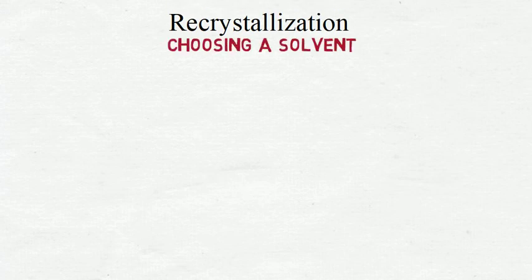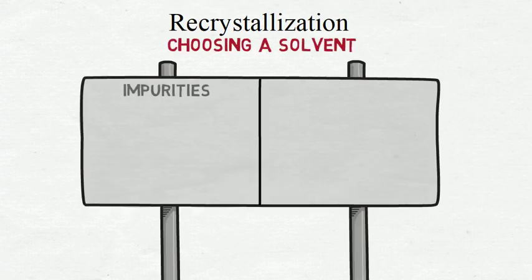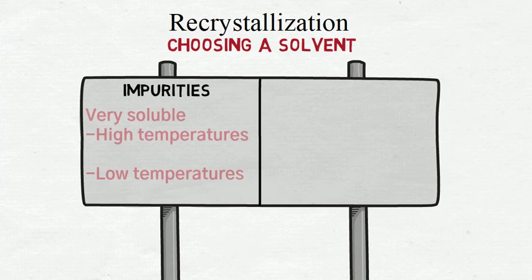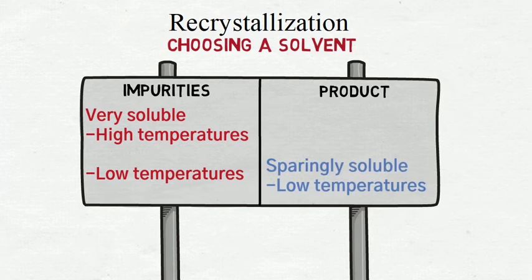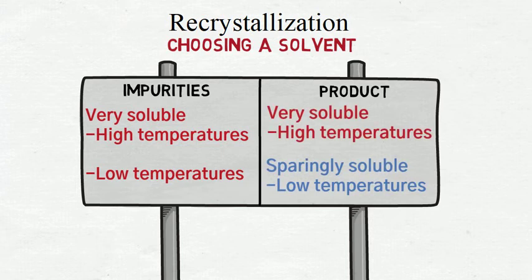The critical step in recrystallization is to find a solvent in which the impurities are very soluble at both low and high temperatures, while the product is only sparingly soluble at low temperatures but very soluble at high temperatures.